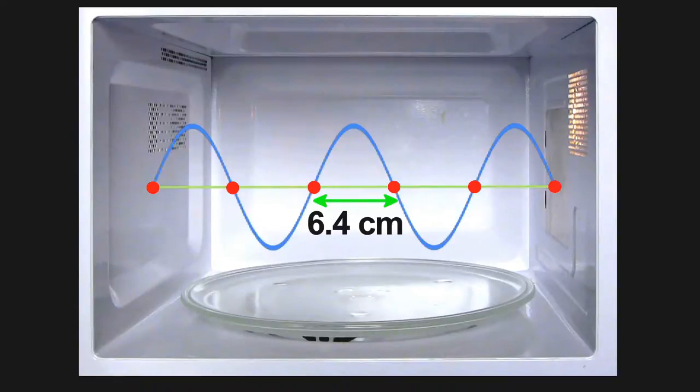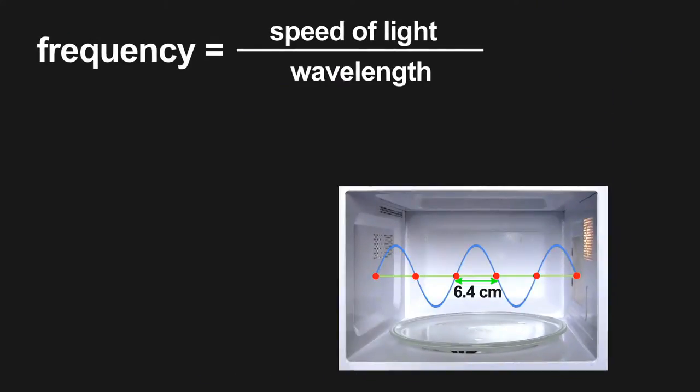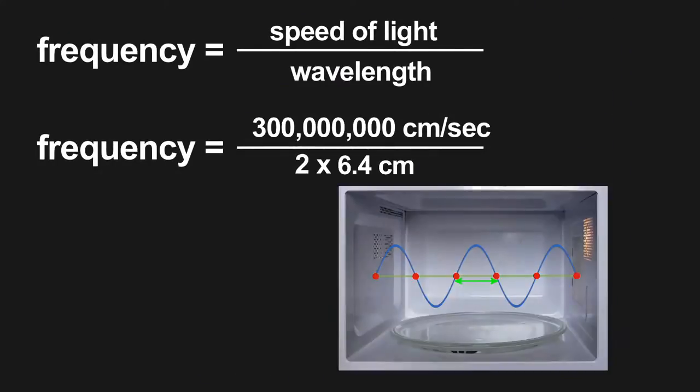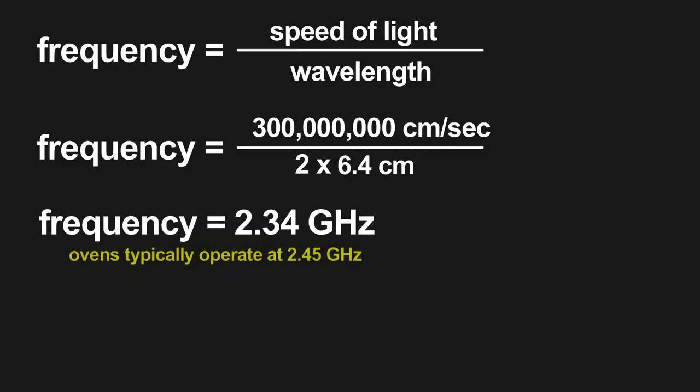Using that wavelength, I can estimate the microwave radiation's frequency. The frequency is related to the wavelength by the speed of light. I get an answer that only has a 4 or 5 percent error. Not bad for this primitive measurement.